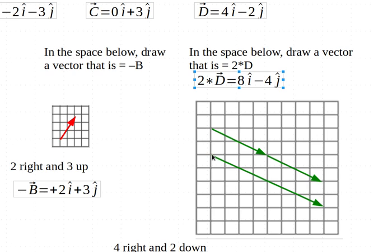Or I have to go 8 to the right: 1, 2, 3, 4, 5, 6, 7, 8. And down 4: 1, 2, 3, 4. So this single long vector represents 2 times D.